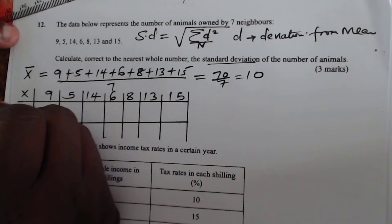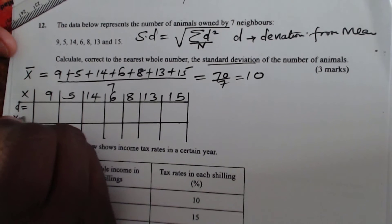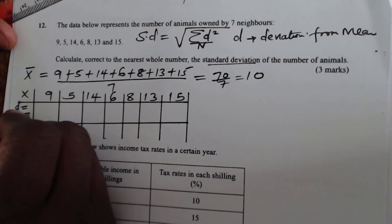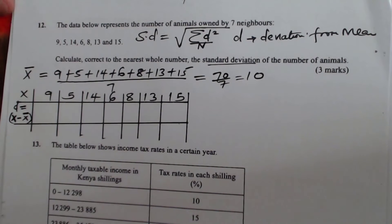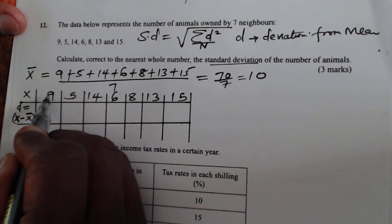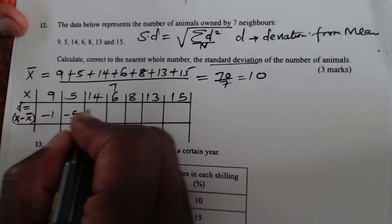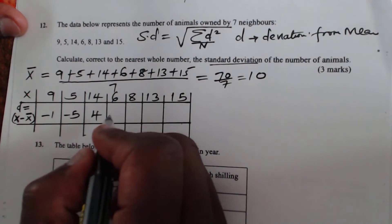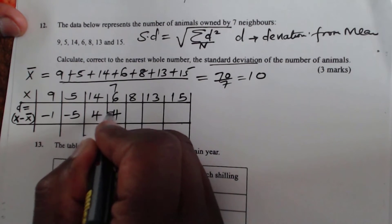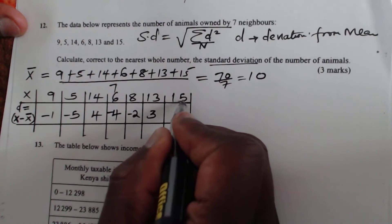So you need to get D, and D will be given by X minus the mean. That is how you get deviation. So D is going to be given by X minus X bar. X bar is the mean. So 9 minus 10 is negative 1, 5 minus 10 is negative 5, 14 minus 10 is 4, 6 minus 10 is negative 4, 8 minus 10 is negative 2, 13 minus 10 is 3, 15 minus 10 is 5.